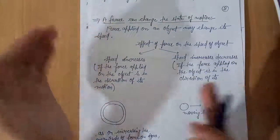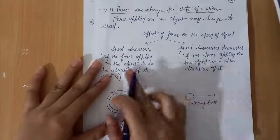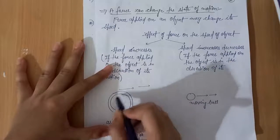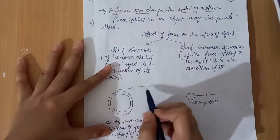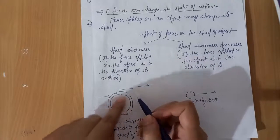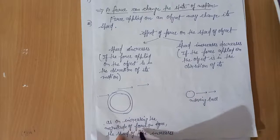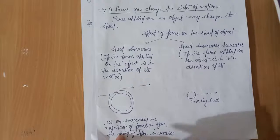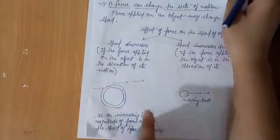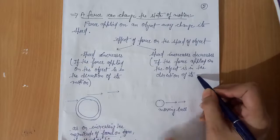Speed can be increased or decreased by exerting force on the object. If the force applied on the object is in the direction of its motion, then speed increases. For example, this is a moving wheel — if we exert force by our hand on this moving wheel in the direction of its motion, then the speed of this moving wheel will be increased. As we increase the magnitude, that is the strength, of the force on the tire, the speed of the tire increases. Speed decreases if the force applied on the object is in the opposite direction of its motion.